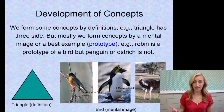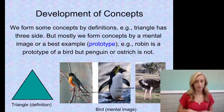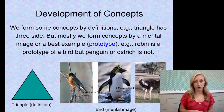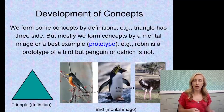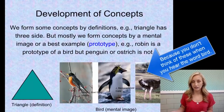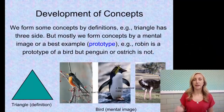We form some concepts by definition — for example, a triangle has three sides. But mostly we form concepts by a mental image or best example, which is called our prototype. For instance, a robin is a prototype of a bird, but a penguin or ostrich is not. A prototype is your mental image or best example that you have for a concept.